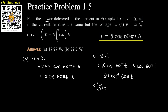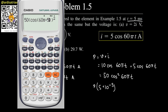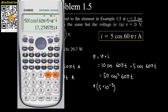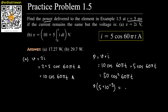I made a mistake — t should be 5 milliseconds, not seconds, so we need to multiply t by 10⁻³. With that correction and using the calculator, the result is 17.27 watts.